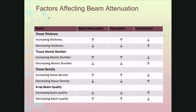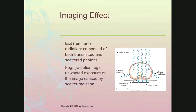When we look at tissue thickness, the tissue's atomic number, tissue density, and x-ray beam quality, it tells you how each affects attenuation as a whole and how it affects absorption and transmission. It's a nice concise chart describing each factor and how it affects the absorption and transmission that takes place in the patient.